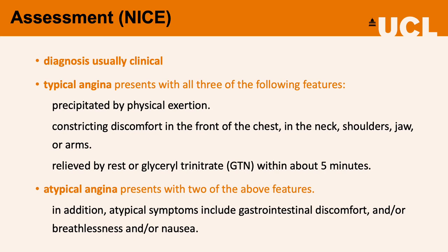Typical angina presents with all three of the following features: precipitated by physical exertion; constricting discomfort in the front of the chest, neck, shoulders, jaw, or arms — noting that they don't have to have discomfort in all of those places; and relieved by rest or GTN spray within about five minutes.